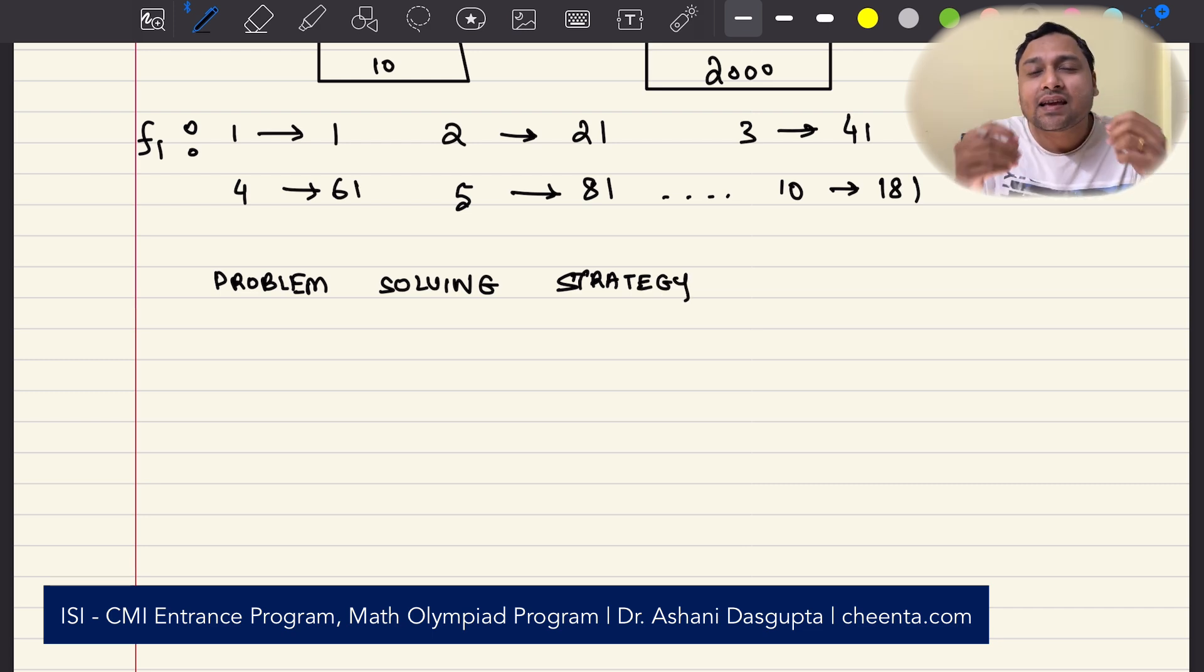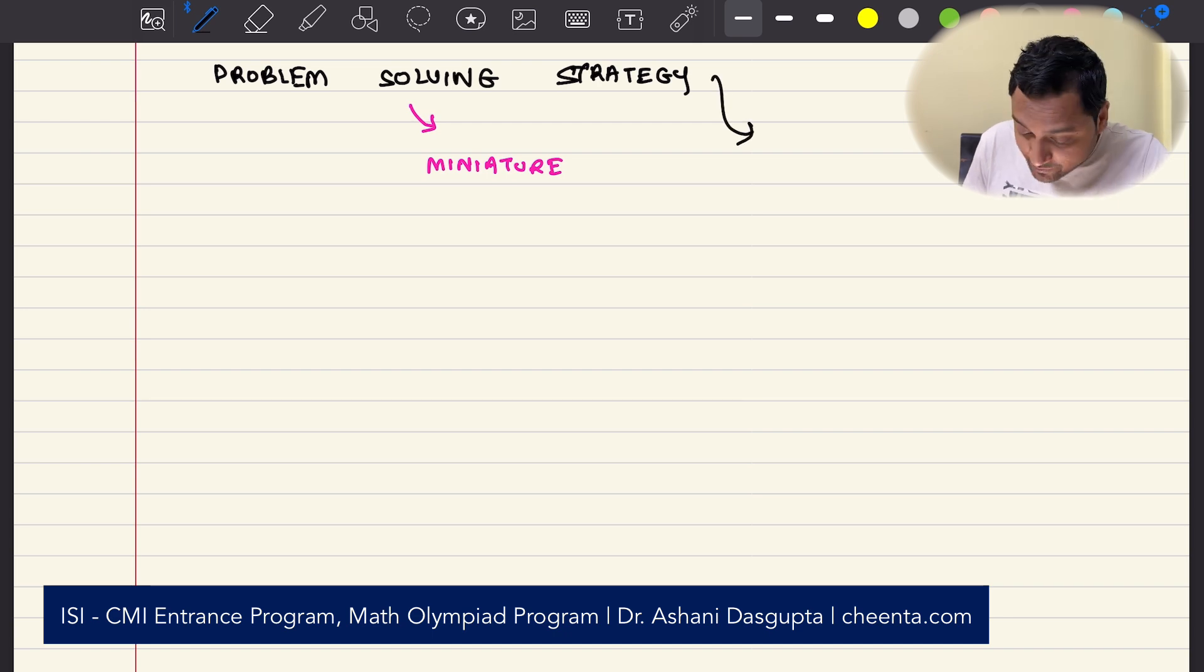One way to go about this, and this is a problem-solving strategy, is to think about small examples. I call this miniature. If you want to solve the big problem with 10 input values and 2,000 output values, why don't you try and solve a smaller version of this problem? Maybe you will notice some pattern. This is actually from a book called How to Solve It by Polya. You can check that book out. It has very interesting problem-solving strategies, and we use it all the time in our Math Olympiad program, ISI-CMI entrance programs, Physics Olympiads, Computer Science Olympiads and so on.